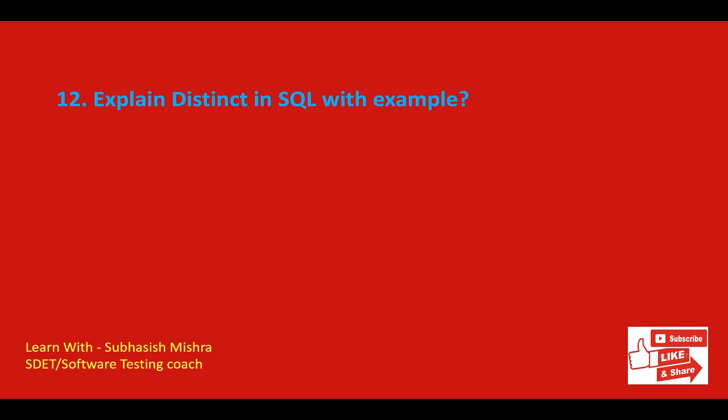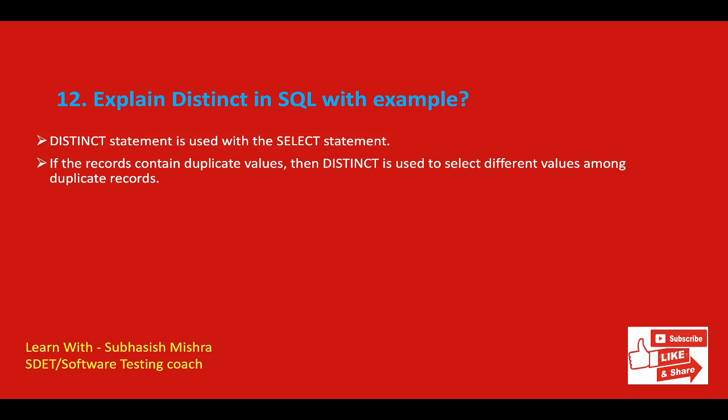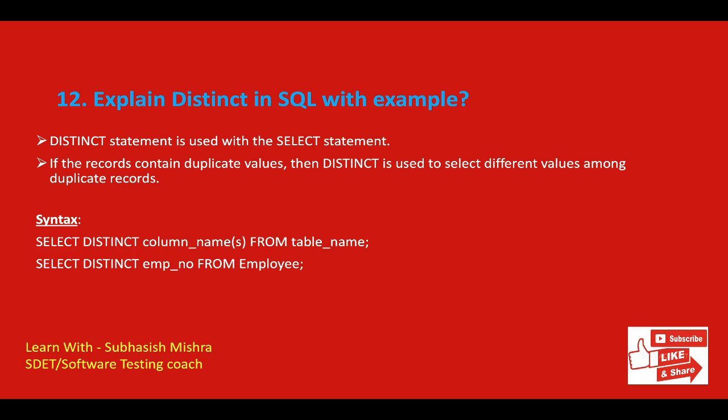Explain DISTINCT in SQL with an example. You will get a question around the DISTINCT keyword in an in-depth SQL interview. The DISTINCT keyword is used with the SELECT keyword. It is helpful when there is a need to avoid duplicate values present in any specific column in a table. When we use the DISTINCT keyword, only unique values are fetched. Here you can see the syntax — the query selects the distinct employees from the table named employee, returning unique employee numbers from the employee table.